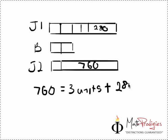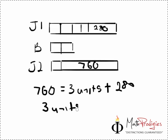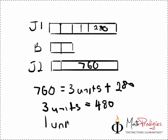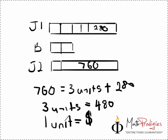And that's when you will get, once you work it out, you get 3 units equals to 480, correct? And 1 unit will equal to 480 divided by 3, which will actually give you 160.